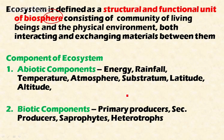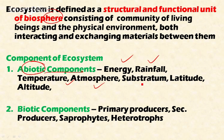There are two components in the ecosystem: abiotic components and biotic components. Abiotic means without life — that is, non-living components. These include energy, rainfall, temperature, atmosphere, substratum, soil, latitude, and altitude. These components have a great influence on living organisms in any ecosystem.